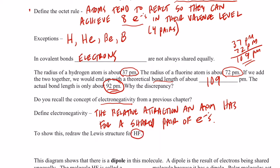Now, to show this, we're going to redraw the Lewis structure for HF right here. We have H sharing a pair with fluorine, and then we have these non-bonding pairs, or lone pairs, that are used to complete fluorine's octet. This pair of electrons ends up spending more time around the fluorine atom than it does around the hydrogen atom.